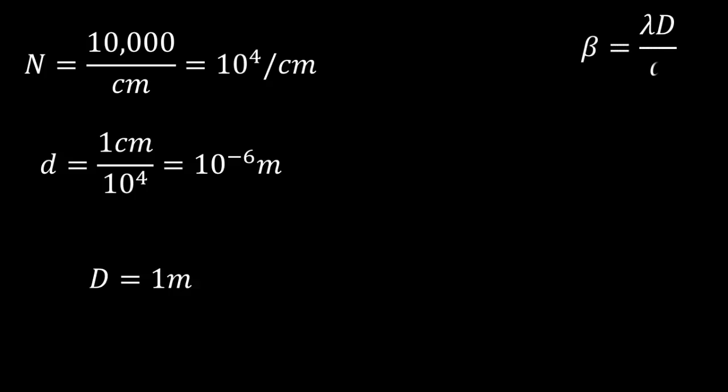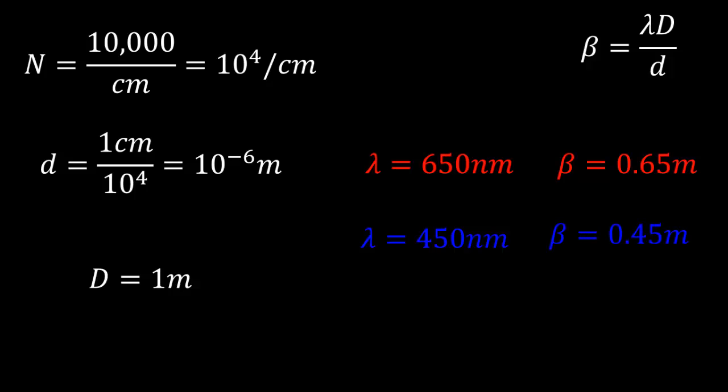And let's now calculate what would be the value for beta for two sources. So let's start with red color, 650 nanometer. And if you plug in, you will see beta to be about 0.65 meters or 65 centimeter. And let the other source be blue, 450 nanometer as an example. And this gives you a beta of 45 centimeters.